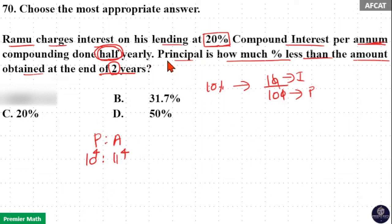Now 10 raise to 4 means 10,000. 11 raise to 4 means 11 cube is 1331.